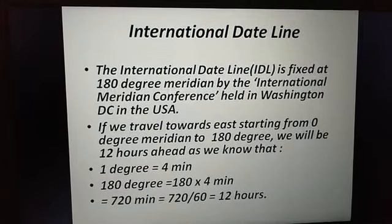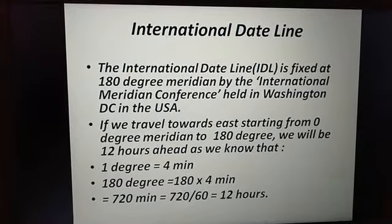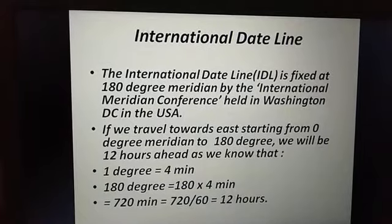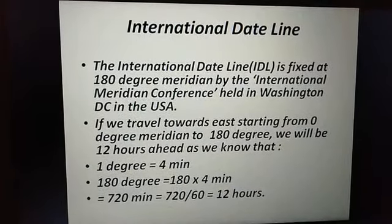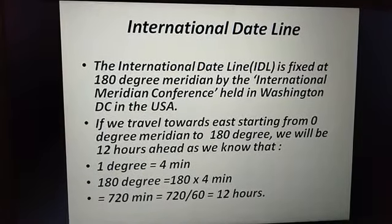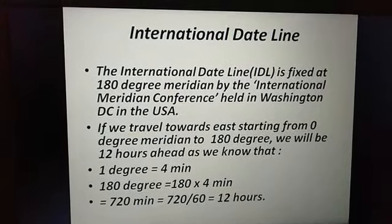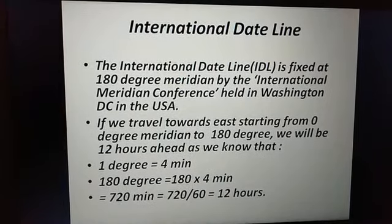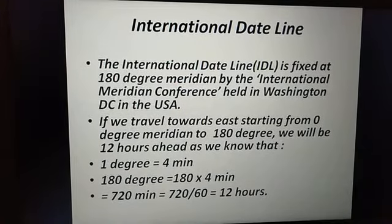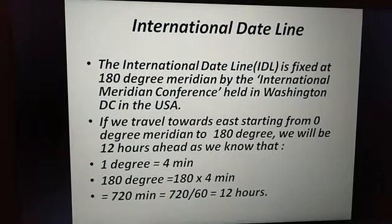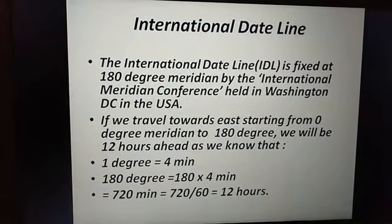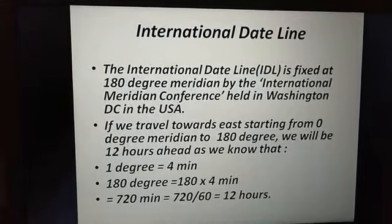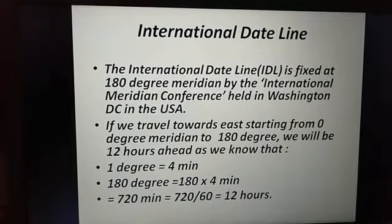We have already discussed the prime meridian, standard time, and time zones. Now let's talk about what the international date line is. The international date line is at 180 degrees — half of a full circle of 360 degrees. When we start from zero degrees, the prime meridian, and go to the other half, that 180 degree meridian is our international date line.